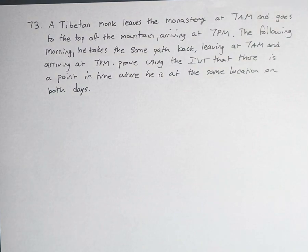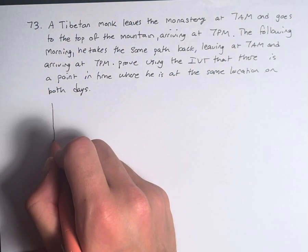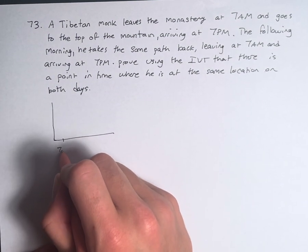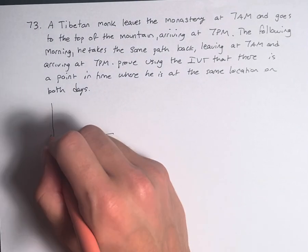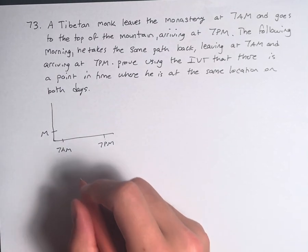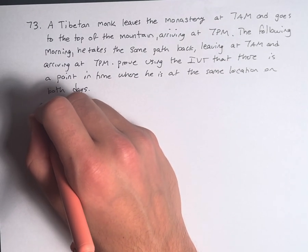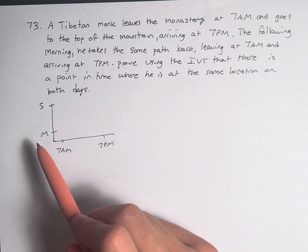So basically, marking over time from 7 a.m. to 7 p.m., he is traveling from the monastery to the summit of the mountain, M and S.